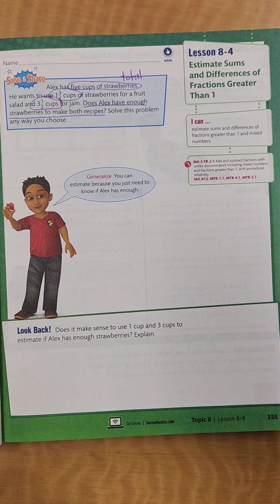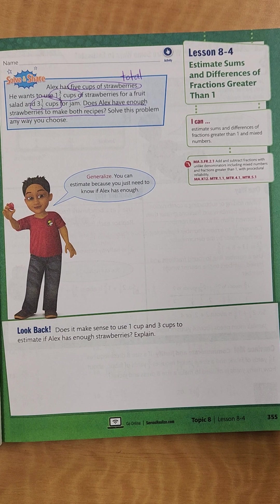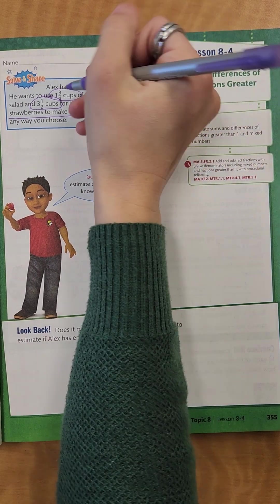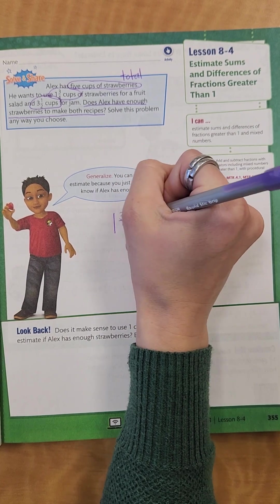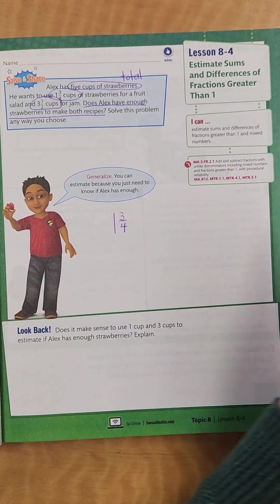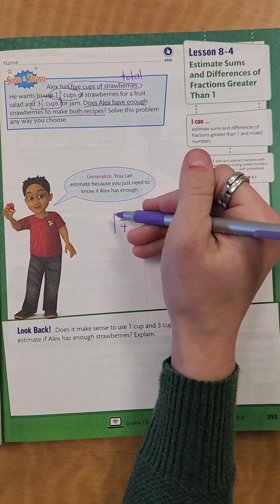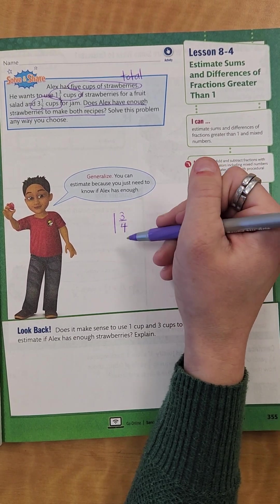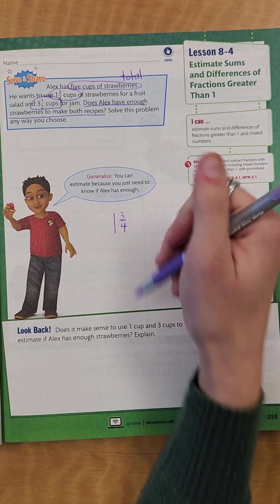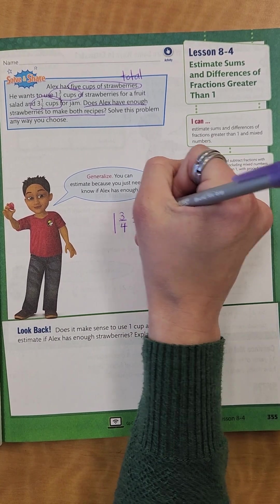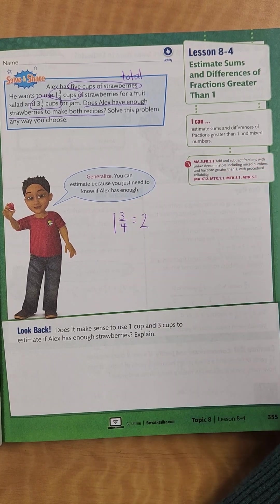So we don't actually have to solve. We can use an estimate to figure out if he's going to have enough. So if I have 1 and 3 fourths, if I round that, I see about how much that is. Well, I know that 1 and 3 fourths, 3 fourths is more than a half and it's going to be closer to one whole. So 1 plus 1 would give me 2. So it would be about 2.